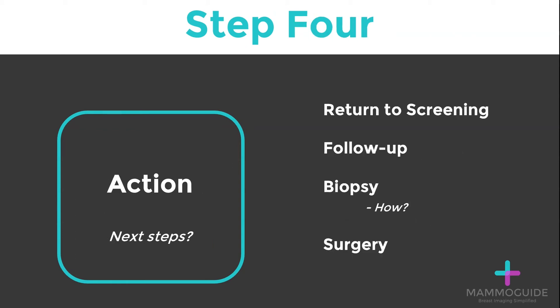The last step is action. Should the patient return to regular screening because it is normal or benign? Is follow-up required in six months or one year? Or is the abnormality suspicious and requires a biopsy? If it requires a biopsy, the next question is how — will it be ultrasound-guided, stereotactic, or MRI-guided? The last possible action is surgery, used infrequently, but always an option if a suspicious finding is not amenable to percutaneous biopsy.